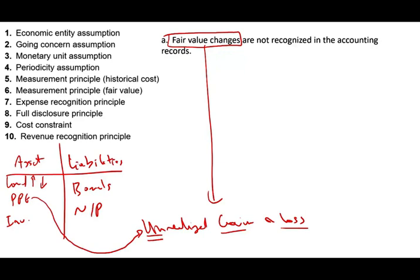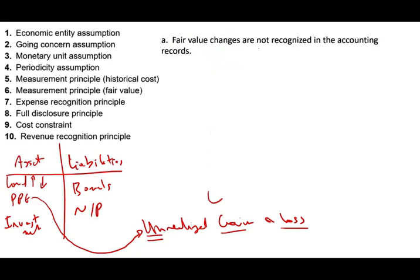For US GAAP, we don't do fair value adjustments for land and PP&E. But if you have an investment, investments do use fair value adjustments. The question states that fair value changes are not recognized in the accounting record. This is the measurement principle, and specifically we are using historical cost. So for this scenario, the answer is the measurement principle — historical cost.